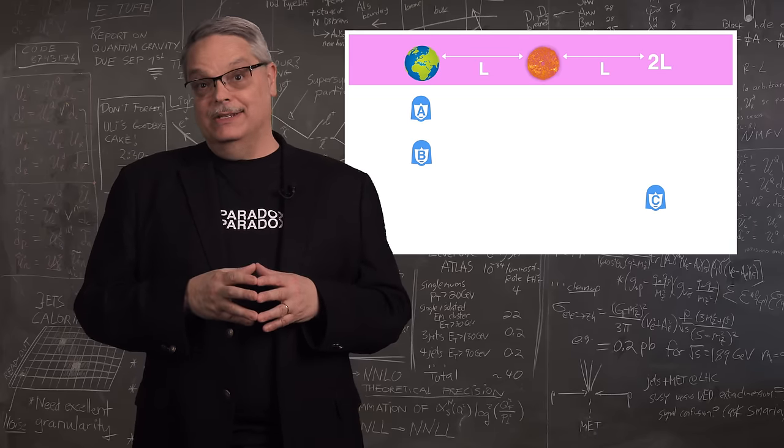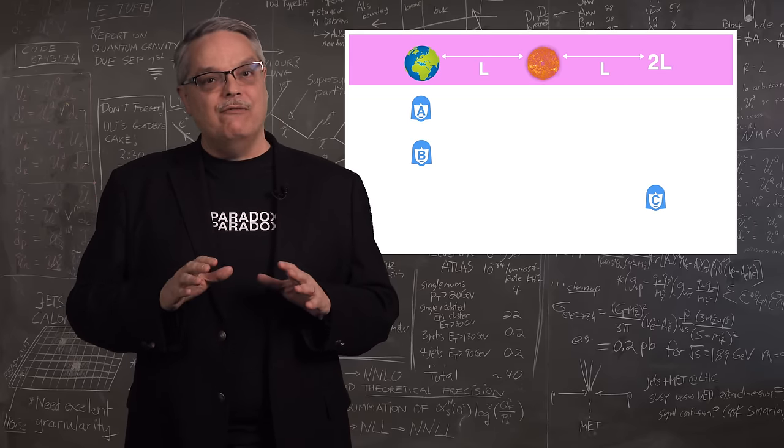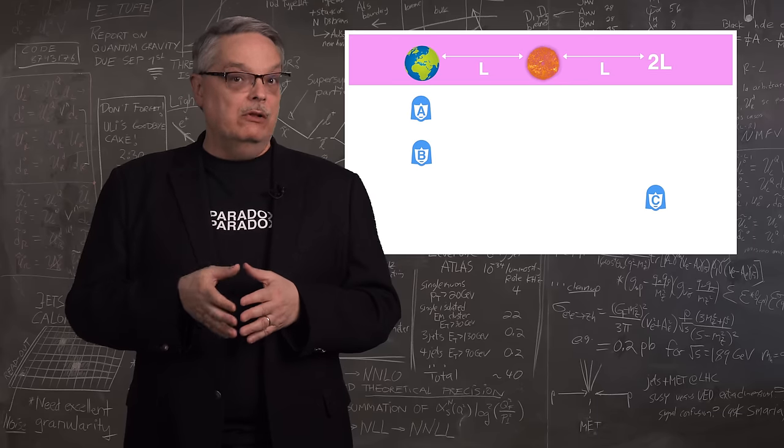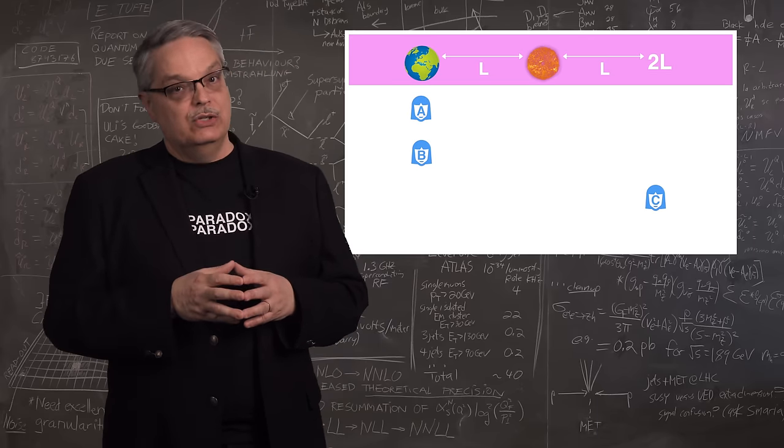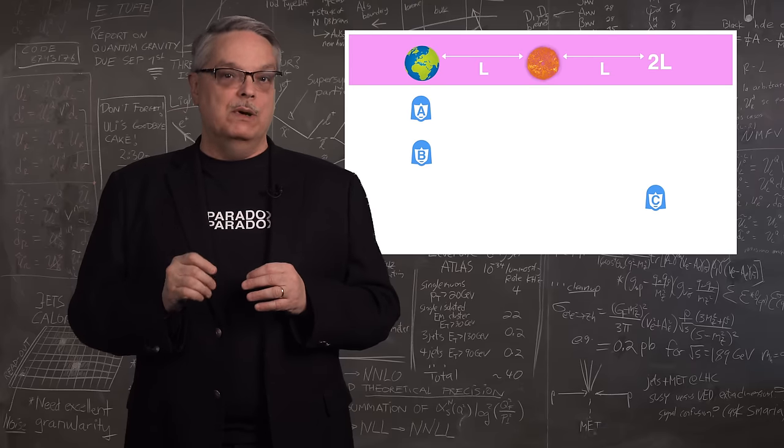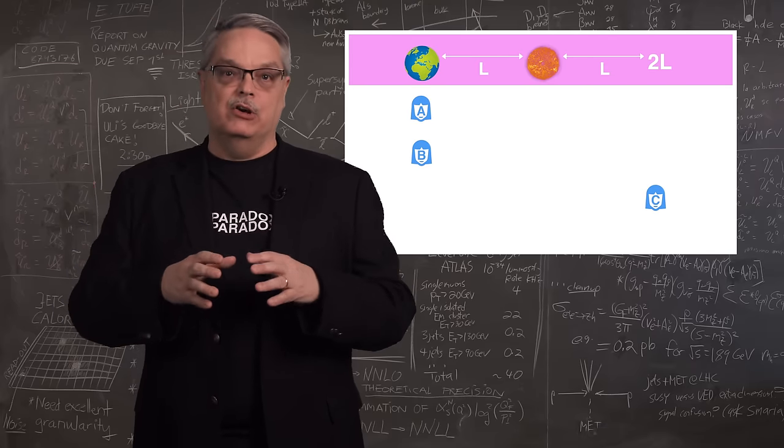Observer A sits stationary on the Earth. Now there are some of you that remind us that the Earth is moving, but one of the premises of relativity is that everybody can consider themselves to be stationary, and in this case the Earth is moving around observer A. So in this case, it's important to remember that it really is legitimate to say that observer A sits stationary on the Earth.